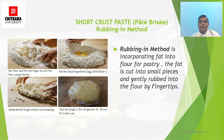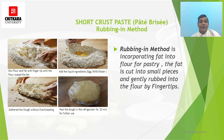For short crust paste, a rubbing method is used. The rubbing method involves incorporating fat into flour for pastry — the fat is cut into small pieces and gently rubbed into the flour using fingertips, as seen in the picture. In the first stage, mix flour and fat with fingertips until the flour coats the fat. Add the liquid ingredients — milk, egg, or water — if required, and gather the dough without over-kneading; just combine all the ingredients without kneading. Then rest the dough in the refrigerator for 20 to 30 minutes before further use.